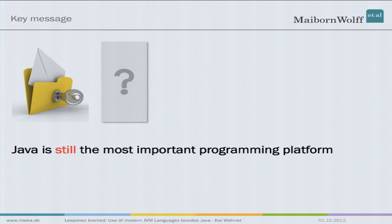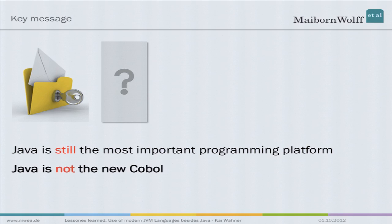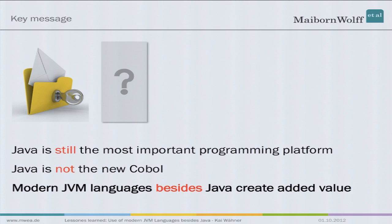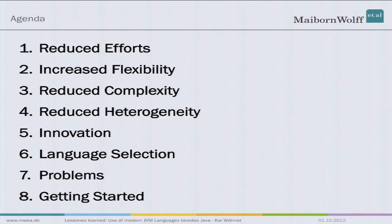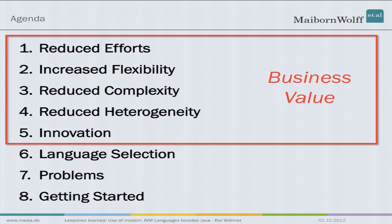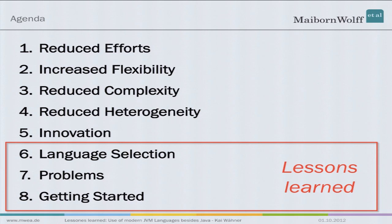This today is a story about escaping from the Java language prison and why we sometimes use other languages besides Java. The key messages of this talk are three. First: Java is still the most important programming platform. Second: Java is not the new COBOL, which I have read sometimes. And most importantly: modern JVM languages besides Java — not instead of Java — create added value. The agenda is separated into two parts: the first is about the business value of these new languages, when we should use them. The second part is about lessons learned, because it's not always good and there are problems.